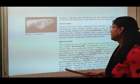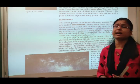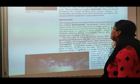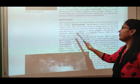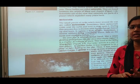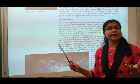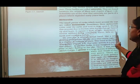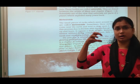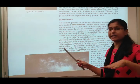Next is meteorites. The small pieces of rocks which move around the sun are called meteorites. Sometimes these meteorites come near the earth and tend to drop upon it. During this process, due to friction with the air, they get heated up and burn, causing a flash of light. Sometimes a meteor, without being completely burned, falls on the earth and creates a hollow shape — a crater.